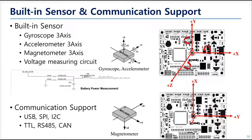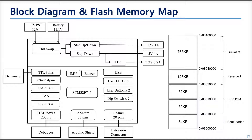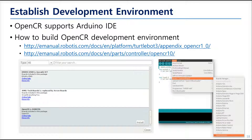An IMU sensor is attached in the middle of the board. A voltage measuring circuit for safety is also included. Various communications are supported, like USB, SPI, I2C, TTL, RS485, and CAN. In the block diagram, the upper part is related to power supply and the bottom part is for extensions. The picture on the right shows the flash memory map. The links will show you how to install the IDE, what is Board Manager, how to set up the library for OpenCR, and how to upload firmware into the OpenCR.